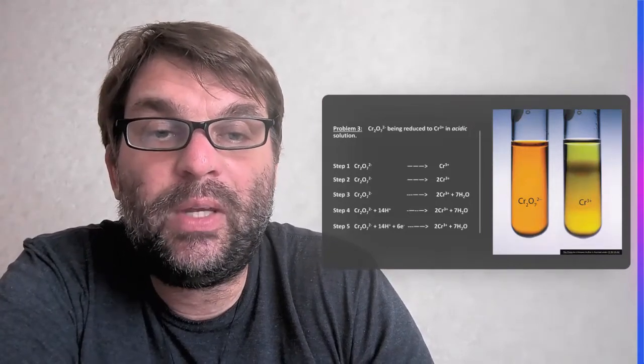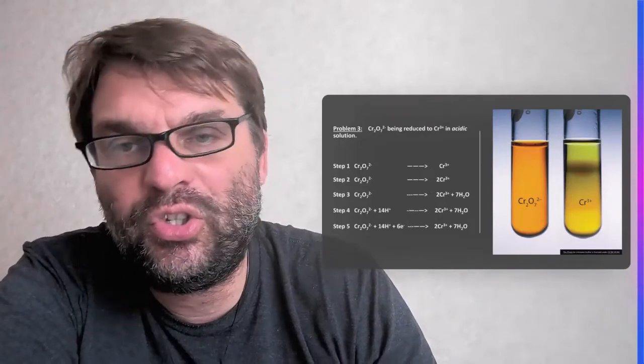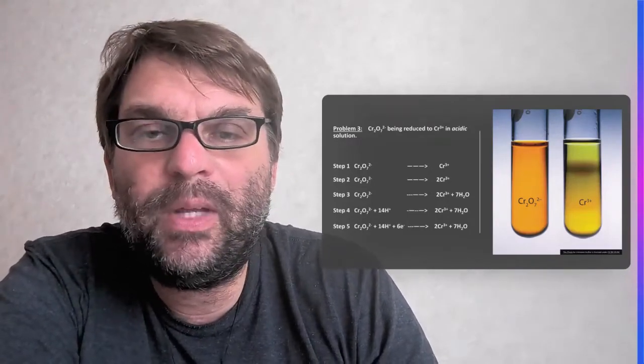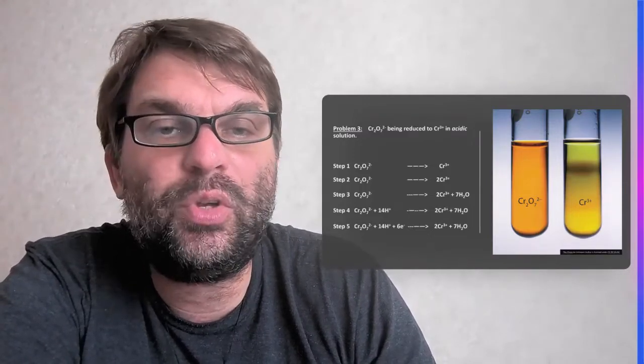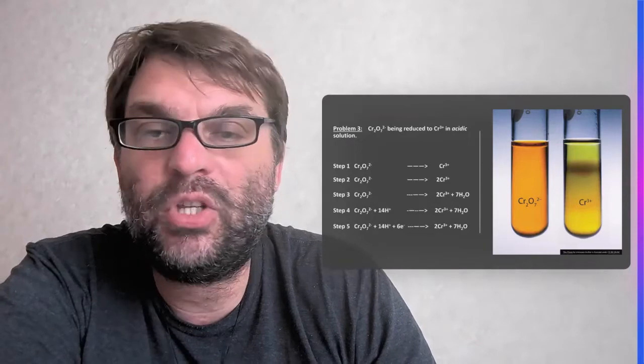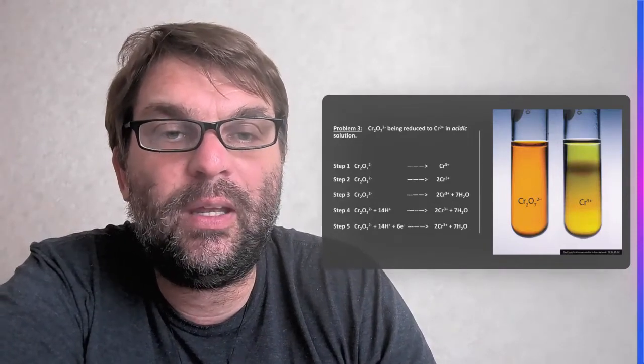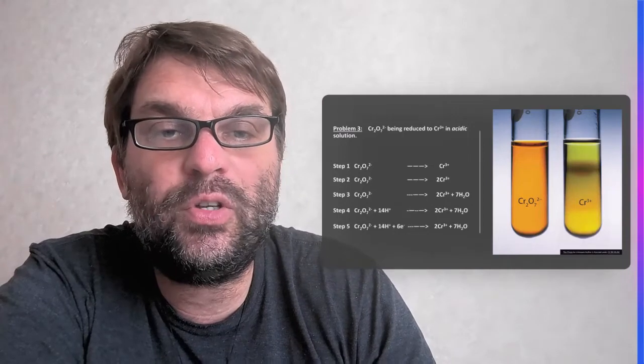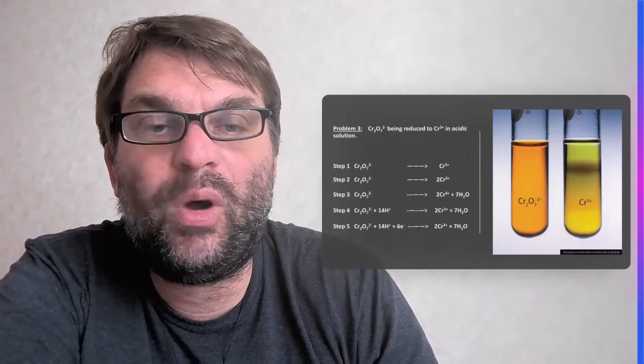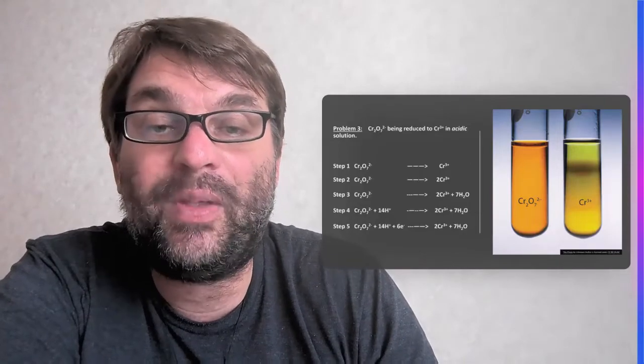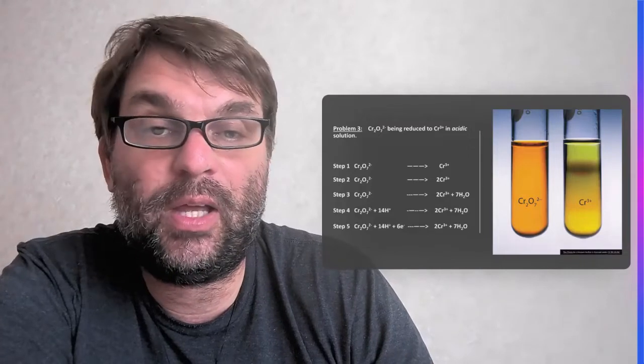At step three, we now have to balance the oxygens by adding waters. So you have seven oxygens on the left-hand side, so you need seven waters on the right-hand side, so they balance out. And now we have added 14 hydrogens on the right-hand side, so we have to therefore add 14 protons on the left-hand side instead of four. So now the number of hydrogens balances out on both sides.